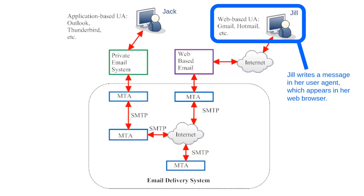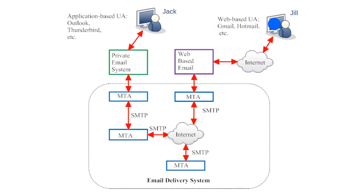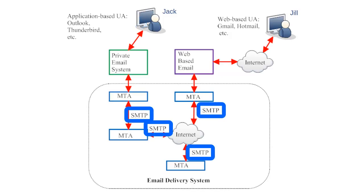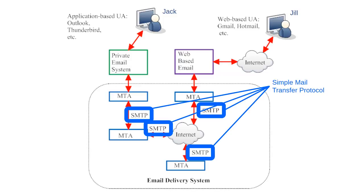Jill would write a message in her user agent, which appears in her web browser. When she hits send, the email would travel through the internet to her web-based email client, which would forward the email to a Message Transfer Agent. The message would travel across the internet through various MTAs, and the final MTA would keep the email in storage until Jack's user agent requested access to new incoming emails. In this illustration, you can see that the connections between Message Transfer Agents are labeled SMTP — Simple Mail Transfer Protocol — which is the communications protocol that MTAs use to communicate with each other. You might think of SMTP as the language of email servers, kind of like how Internet Protocol is the language of the internet.